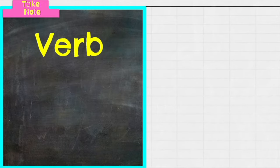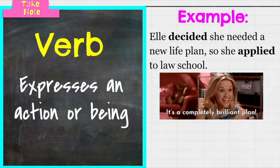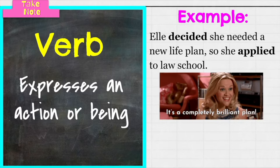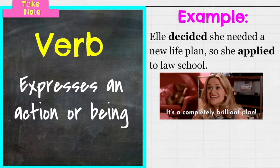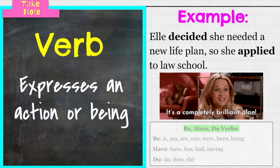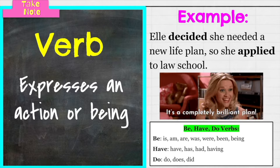Next, we have verbs. Verbs are the busiest words in a sentence because they're all about action — expressing action or being. Every complete sentence has a verb, so they get a good workout. Elle decided she needed a new life plan so she applied to law school. Decided and applied are the verbs — those are our action words. There are also small verbs that don't quite look like action words: the be, have, and do verbs. They're tiny, but they represent a state of being, so those are verbs as well.